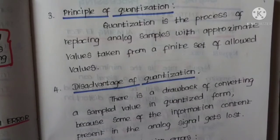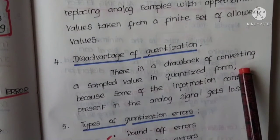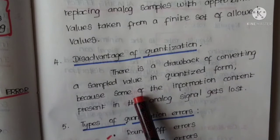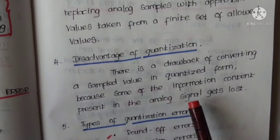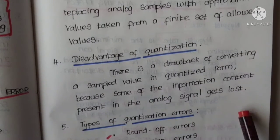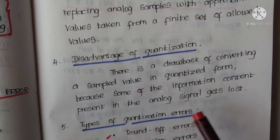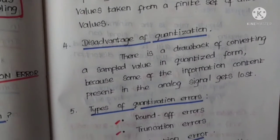There is a disadvantage in quantization. There is a drawback of converting a sampled value in quantized form because some of the information content present in the analog signal gets lost. That is one of the disadvantages of quantization.